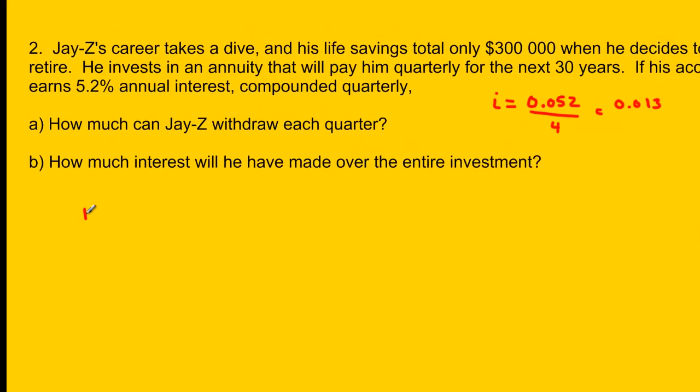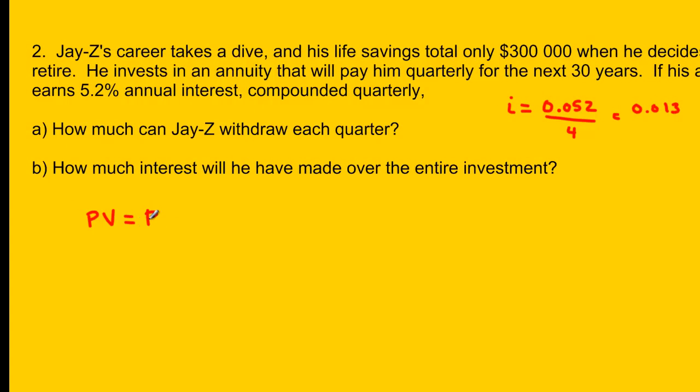Alright, so we'll get our present value formula here. Present value equals R times 1 minus 1 plus i to the exponent negative n, and then everything divided by i. It says that he has saved up $300,000, so that's our present value, so we'll write that here. The regular withdrawals is what we're trying to find, so that's the R. And my i, we know, is 0.013, so this is going to be 1 minus 1.013. Now what's our n value? Well, if he's being paid quarterly for 30 years, n is going to equal 30 years times 4 times a year, so that's 120 total quarters.